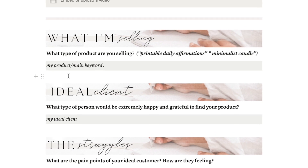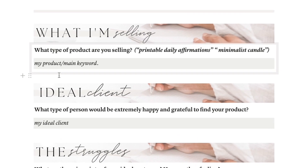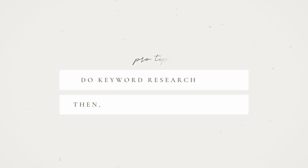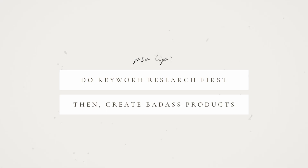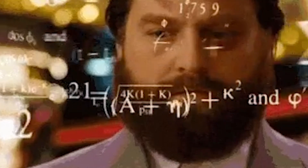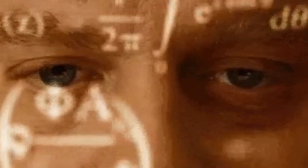The first question is all about the primary keyword that describes your product. Here is a helpful tip: before you make any product, do some research to find which keywords people are using, then make products that fit those keywords. This is way easier than making a product first and then trying to find the right keywords to describe it. Either way, doing research is super important so you don't end up just throwing spaghetti at a wall hoping it sticks.